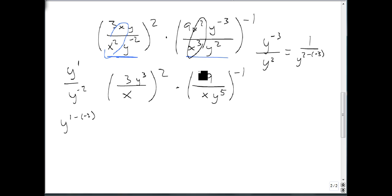Now we exercise those powers. So we square and get nine y to the sixth over x squared times, we flip this upside down, we get an x on top, y to the fifth on top, and nine on bottom.